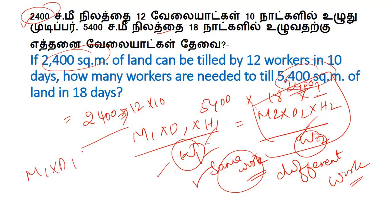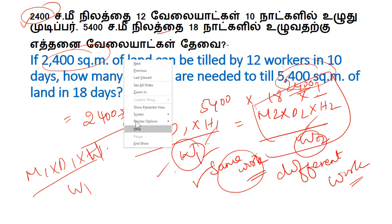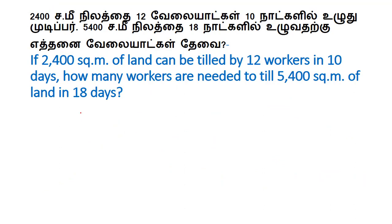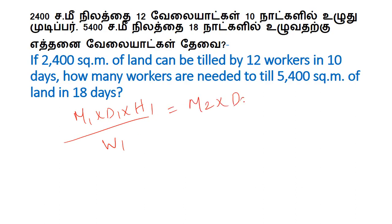M1, D1 divided by Work1 equals M2, D2, H2 divided by Work2. This is the common formula. We need to alter the formula and apply it to solve the answer.